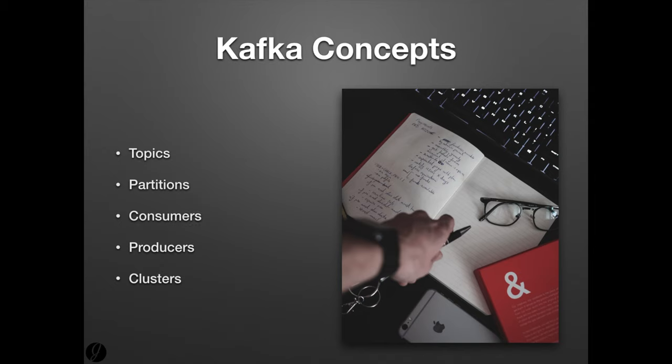Now that you know what Kafka is, let's discuss a little bit about what makes it run. Kafka has five main components: topics, partitions, consumers, producers, and clusters.